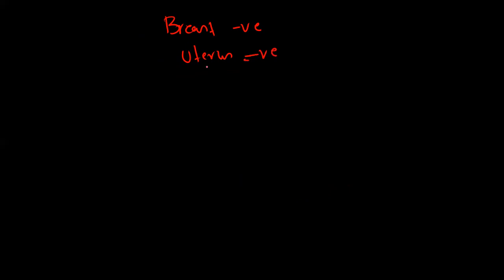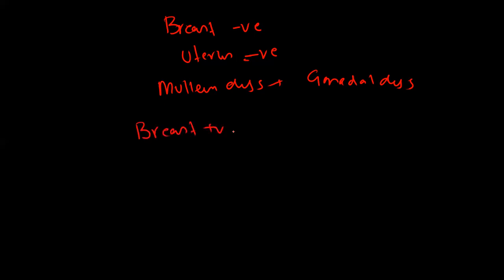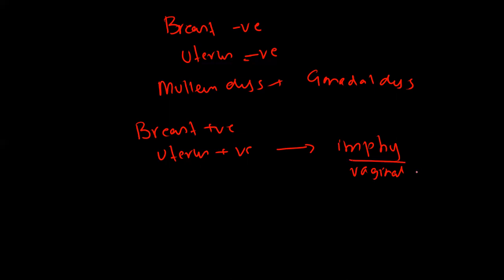In scenario three, the patient has breast absent and uterus absent as well, meaning the patient has both Mullerian dysgenesis and gonadal dysgenesis. In scenario four, the patient has breast present and uterus present. This means the patient has enough estrogen for breast development and the Mullerian tract is intact. So the issue is likely an anatomical obstruction, such as an imperforate hymen or vaginal septum, preventing the shed endometrium from coming out.